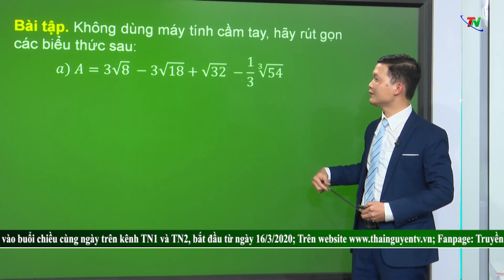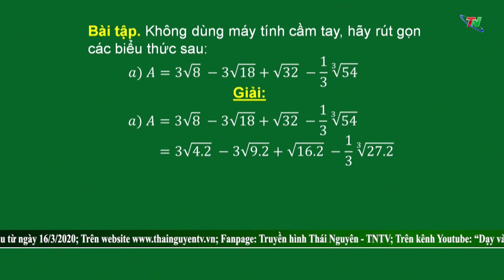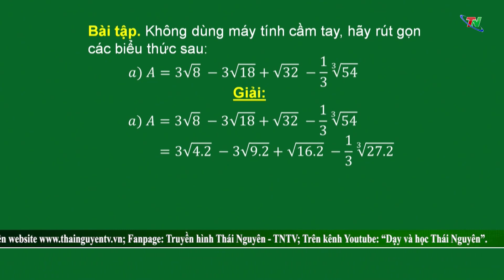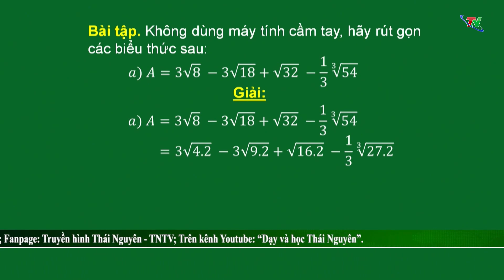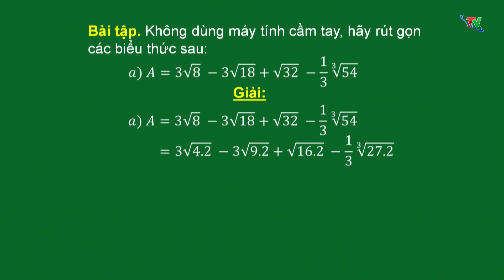Muốn rút gọn được biểu thức này, chúng ta sẽ dùng công thức đưa thừa số ra ngoài dấu căn. Thầy sẽ đưa 8 về thành 4×2, 18 thành 9×2, và 32 thành 16×2. Riêng 54 thì đưa thành 27×2. Các biểu thức chứa căn bậc 2 thì đưa về tích của 2 thừa số, trong đó có 1 thừa số là số chính phương. Còn biểu thức chứa căn bậc 3 thì đưa về tích của 2 thừa số, trong đó 1 thừa số sẽ là lập phương của 1 số. Sau đó áp dụng công thức đưa thừa số ra ngoài dấu căn.